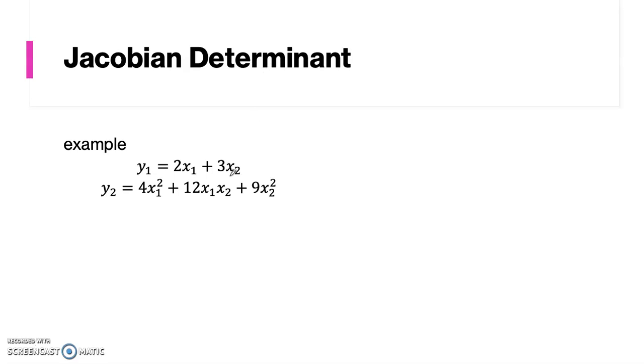First, we get all the four partial derivatives. Since the system equation is y is a function of x1 and x2, thus we find first ∂y1 over ∂x1 equals to 2, and then ∂y1 over ∂x2 equals to 3.